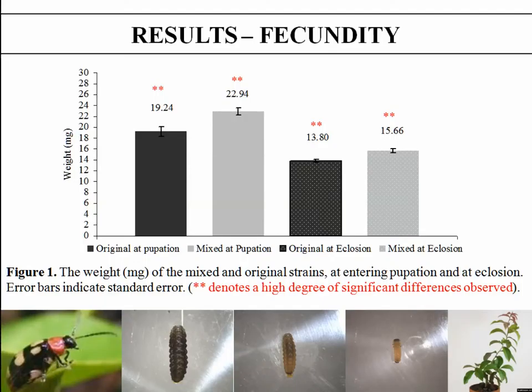The weight of the two populations entering pupation and at eclosion is quite a good indication of fecundity and health within the population. Since Fenrica pupates in the soil we couldn't measure pupal mass without killing the insects, so we measured weight at entering pupation and eclosion as adults. We were able to show that the mixed strain is heavier in both instances compared to the original strain, and these differences were also deemed to be statistically significant.